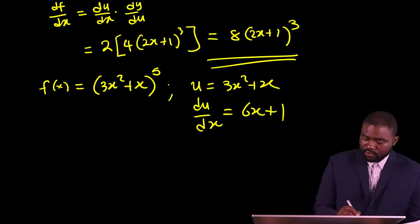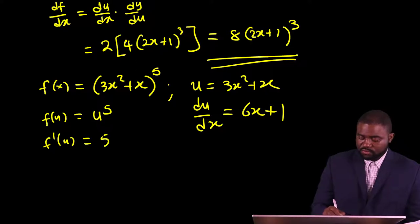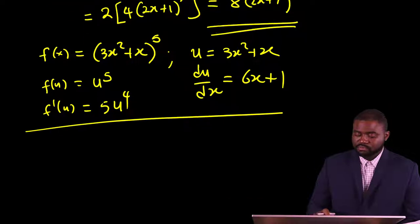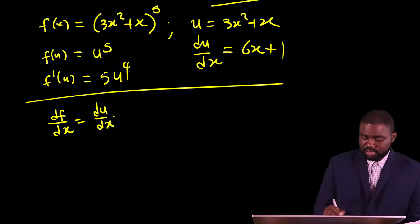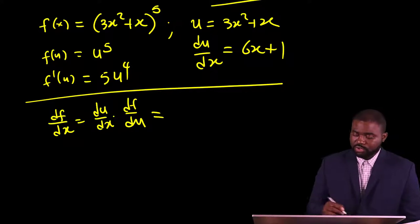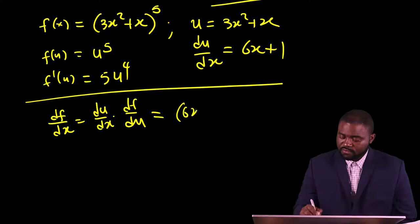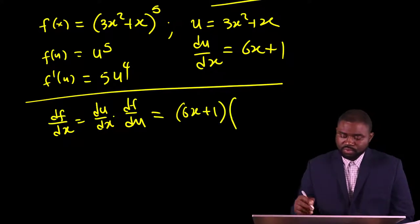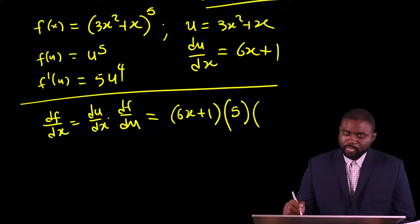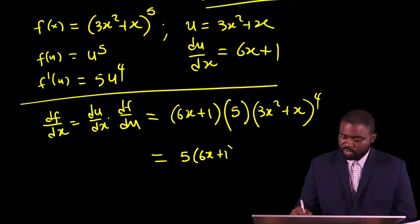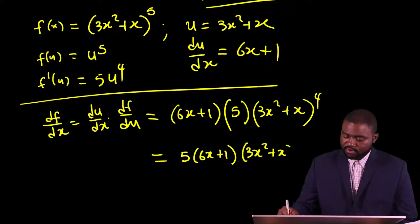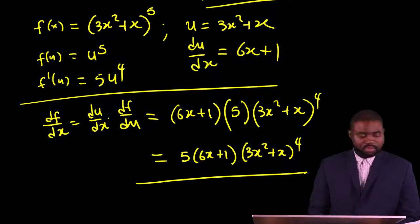We therefore know that f of u is equal to u raised to the power of 5. Therefore, f prime of u is equal to 5u⁴. By definition, df/dx is equal to du/dx dot df/du, which will be equal to (6x + 1) multiplied by 5(3x² + x) raised to the power of 4. We can rewrite this as 5(6x + 1)(3x² + x)⁴. And that gives our answer.